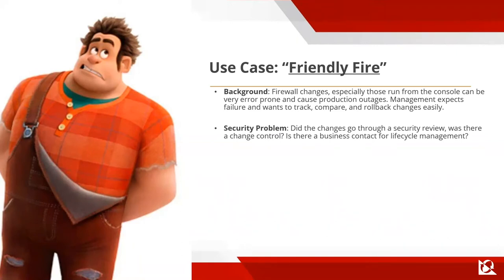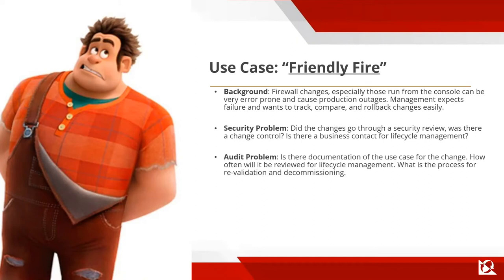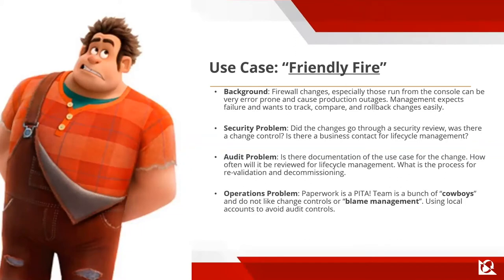Security wants to know: did the changes go through a security review? Was there a change control? Typically you get a call from your manager, jump in, run some commands, fix it — no change control, no email, no one knows anything happened. Is there documentation for the use case? Why did it occur, and how often will changes be reviewed for lifecycle? If you're a firewall admin, you're typically getting hammered by audit regularly. Using local accounts to avoid audit controls can be stopped quickly — you can audit the checkout and change process.